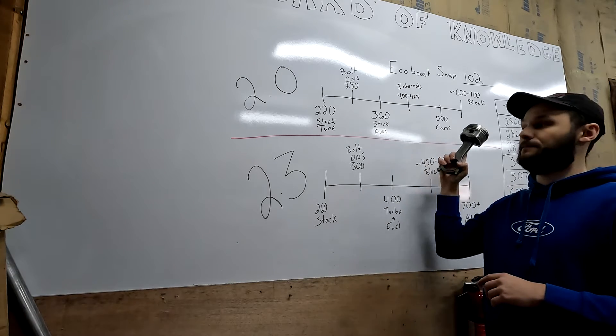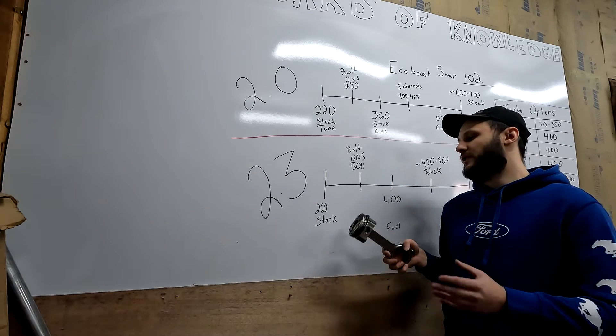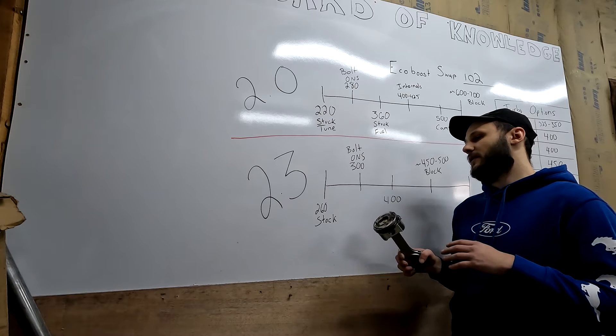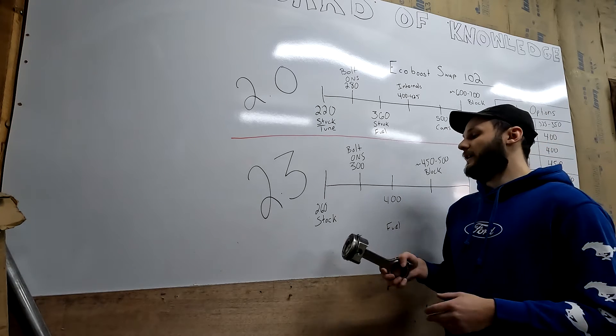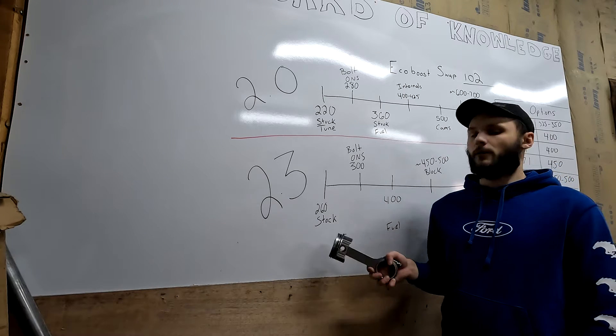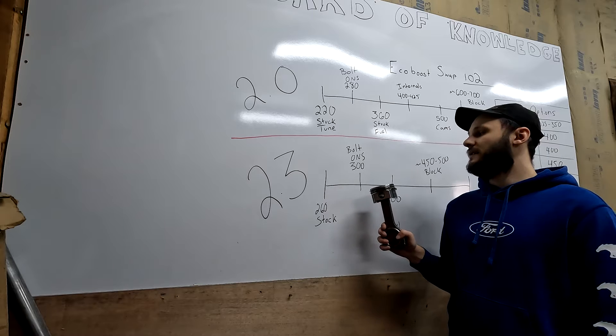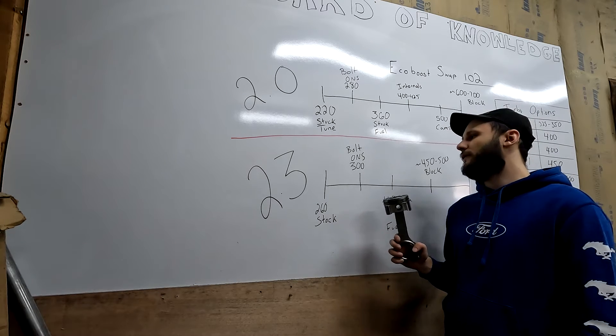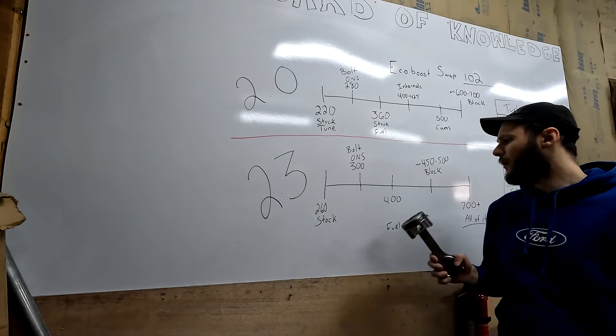Onto the 2.3. The 2.3 in stock form will make about 260 wheel horsepower. That is rear wheel horsepower, not all wheel, because the 2.3 also came in all-wheel drive applications. But for any of you rear wheel drive guys, 260 stock number. With bolt-ons and a tune, you can expect to make 300, maybe a little bit more, 350, depending on how aggressive you get with the tuning.